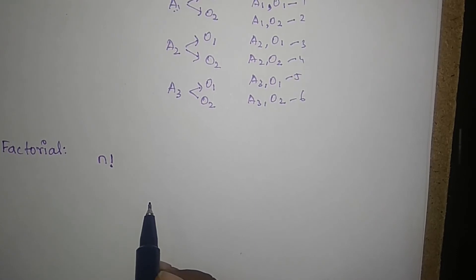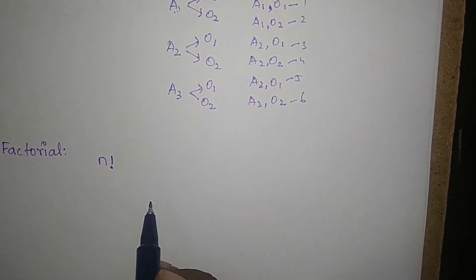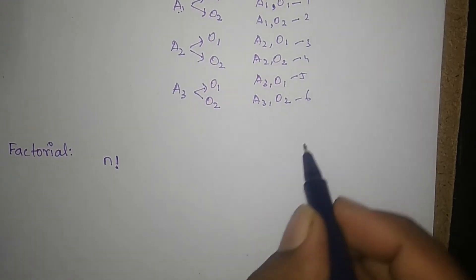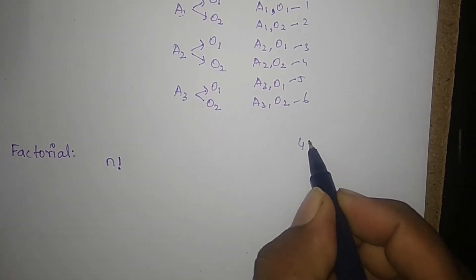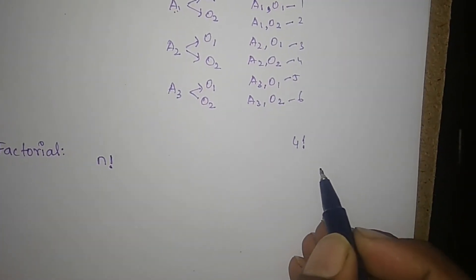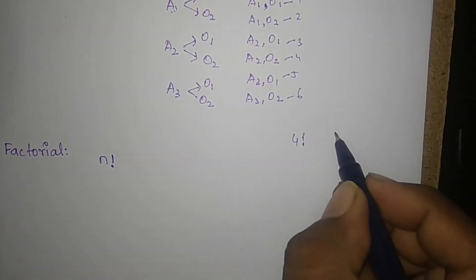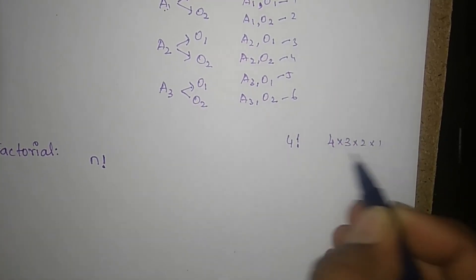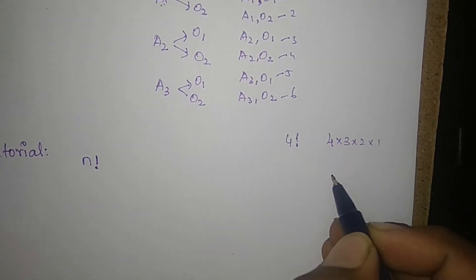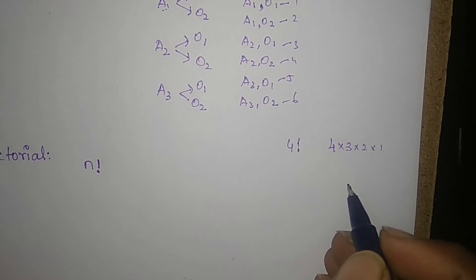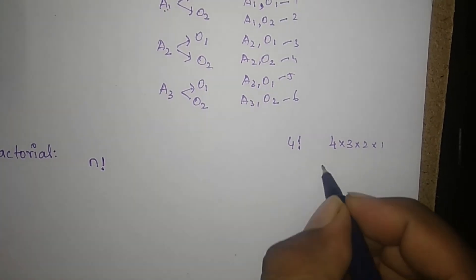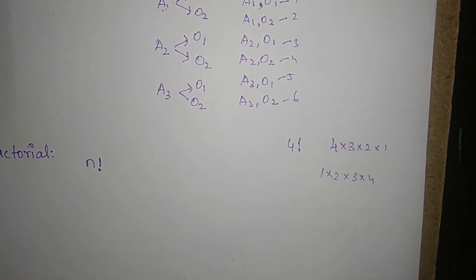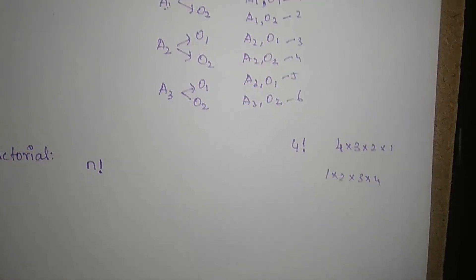So n factorial is the multiple of the first n natural numbers. For example, 4 factorial — starting with 4: 4, 3, 2, 1. So the first n natural numbers in ascending order are 1, 2, 3, 4. That is 4 factorial. We can write it in descending order as well — 4 factorial written in descending order.